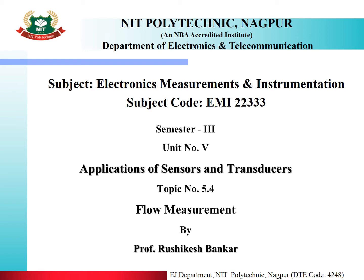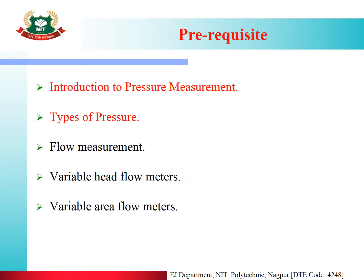In the last lecture, we completed the topic of pressure measurement. In today's session, we will see topic 5.4, that is flow measurement, under Unit 5: Applications of Sensors and Transducers. The prerequisites are introduction to pressure measurement and types of pressure, the two topics learned in the last lecture. Today we will see flow measurement, then variable head flow meters and variable area flow meters.